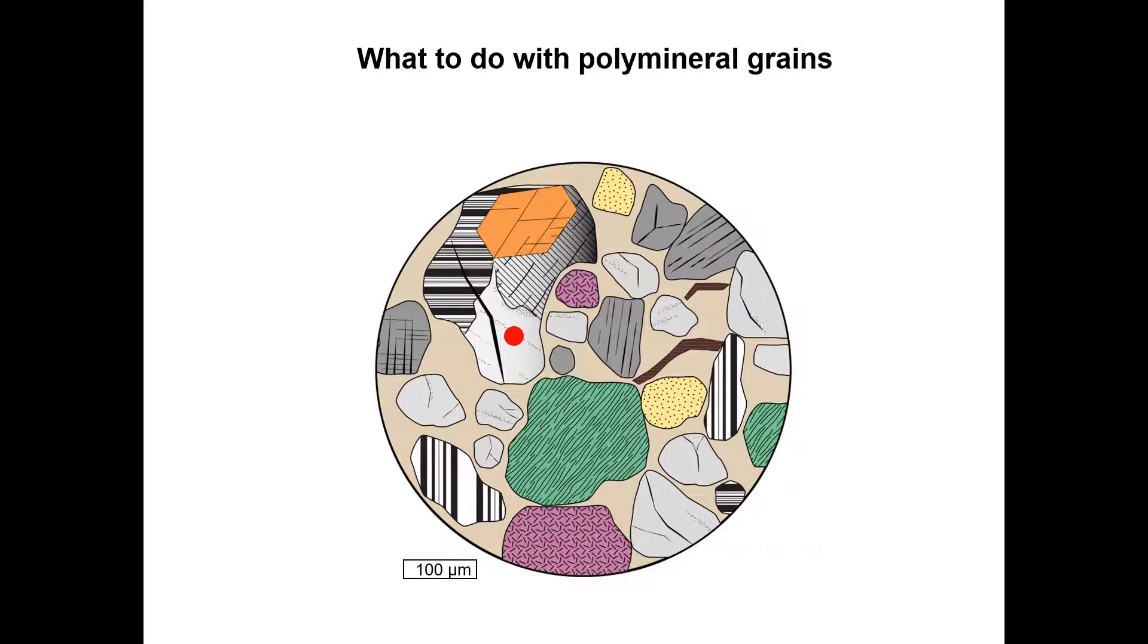The first one, the so-called Gazi-Dickinson method, requires you to strictly count the mineral under the crosshairs, no matter if it belongs to a larger grain or not. There is a grain size limit to this approach which is commonly set as 63 microns, the lower limit of the sand grain size.